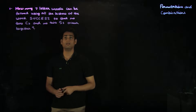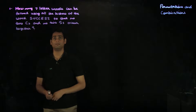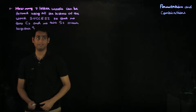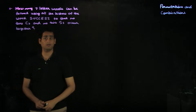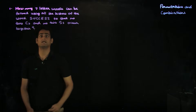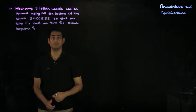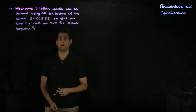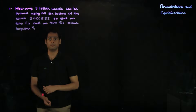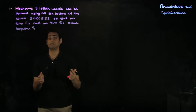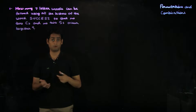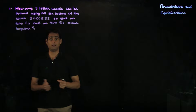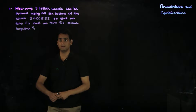So you've got to find all seven-letter words that can be formed using SUCCESS so that no two C's and no two S's occur together. Note that the word SUCCESS has two C's and three S's. Considering the case when no two S's occur together, it's going to be more complicated since we have three S's in total and we've got to keep track of all of them.